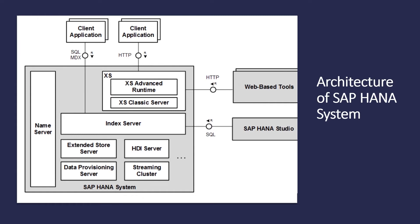Now let's talk about the architecture of SAP HANA. SAP HANA mainly has a name server, index server, and some access servers such as XS Advanced runtime, XS Classic server, extended store servers, SDI server, data provisioning server, and streaming cluster. These are the main components of the SAP HANA database system. An SAP HANA system comprises all the server components of an installation.